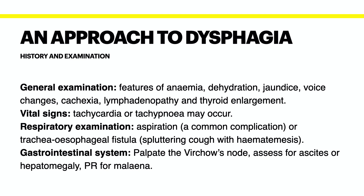Patients might have tracheoesophageal fistulas due to malignant invasion, and this typically presents with a spluttering cough with hematemesis. Features which may occur in a patient with pneumonia include decreased vocal fremitus, dullness to percussion, and decreased air entry on one side. On GI exam, you can palpate a Virchow's node if there's malignancy, assess for ascites or hepatomegaly, and don't forget to do a PR to check for melena, which is a feature of an upper GI bleed.